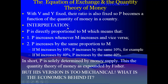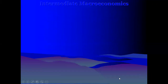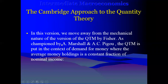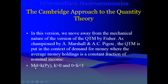Some people said that this version is too mechanical, too raw — just pure math. So they introduced the Cambridge approach, propounded by Alfred Marshall and Cecil Pigou. For them, they were trying to put this whole theory in the context of demand for money. What is stated is that money demand is a constant fraction of nominal income, where K is the constant of proportionality.